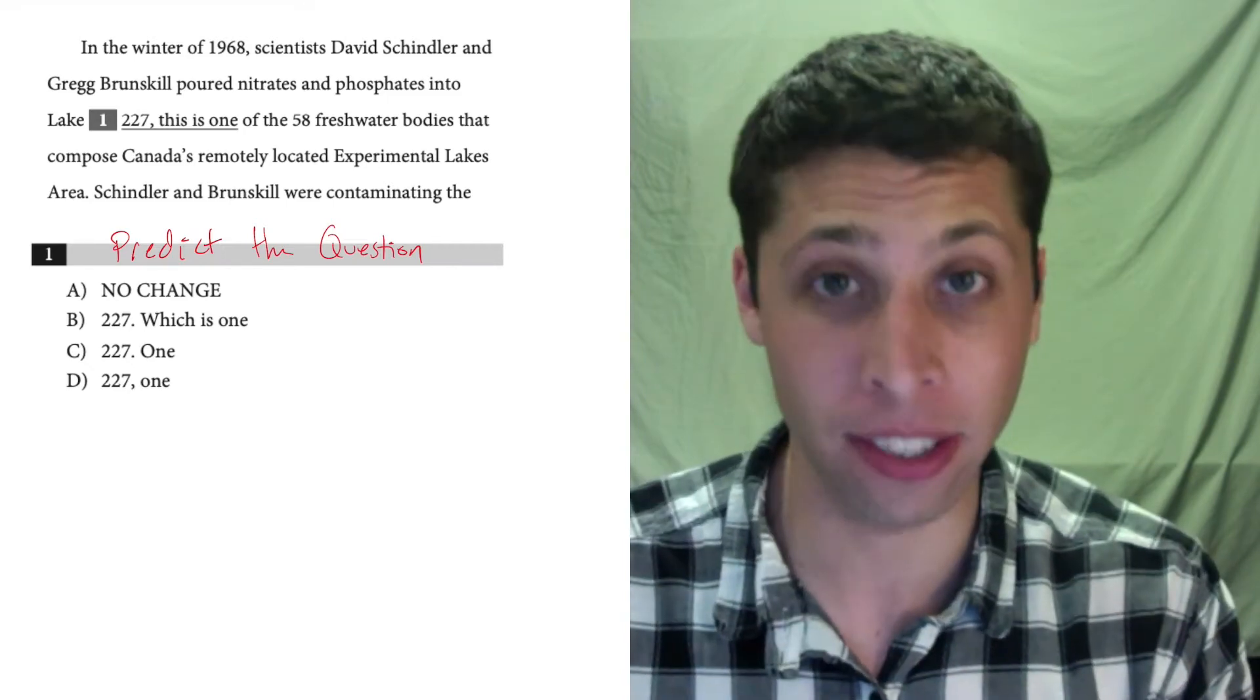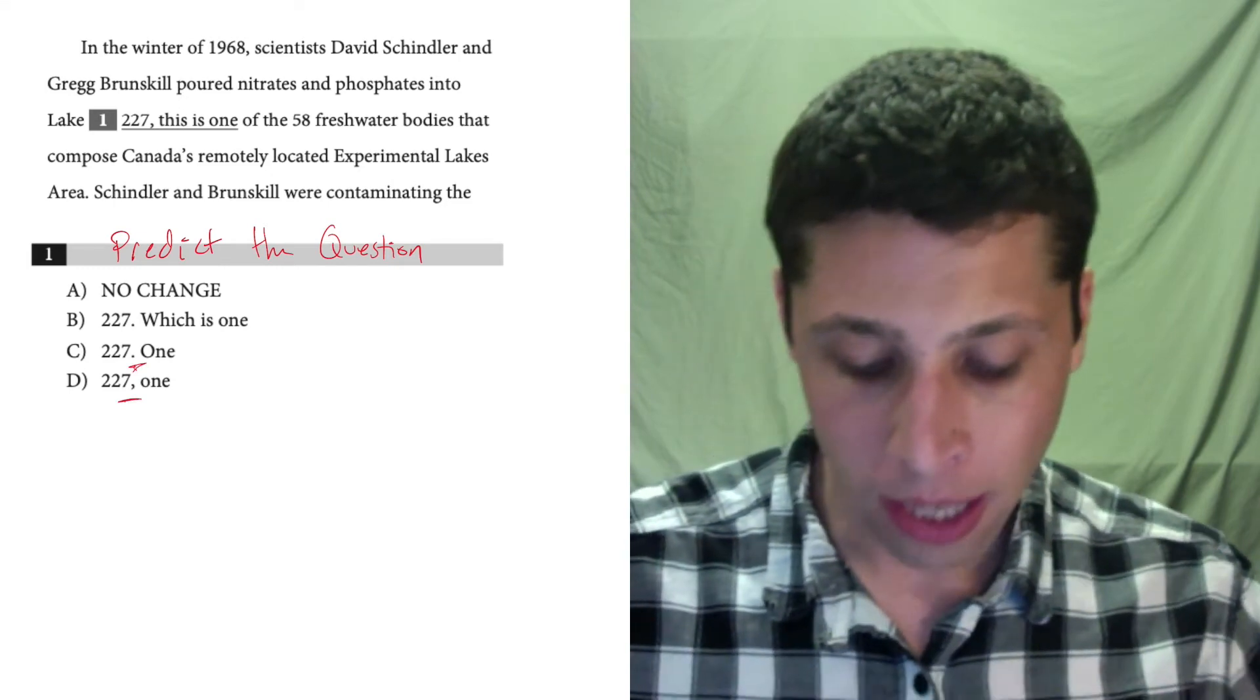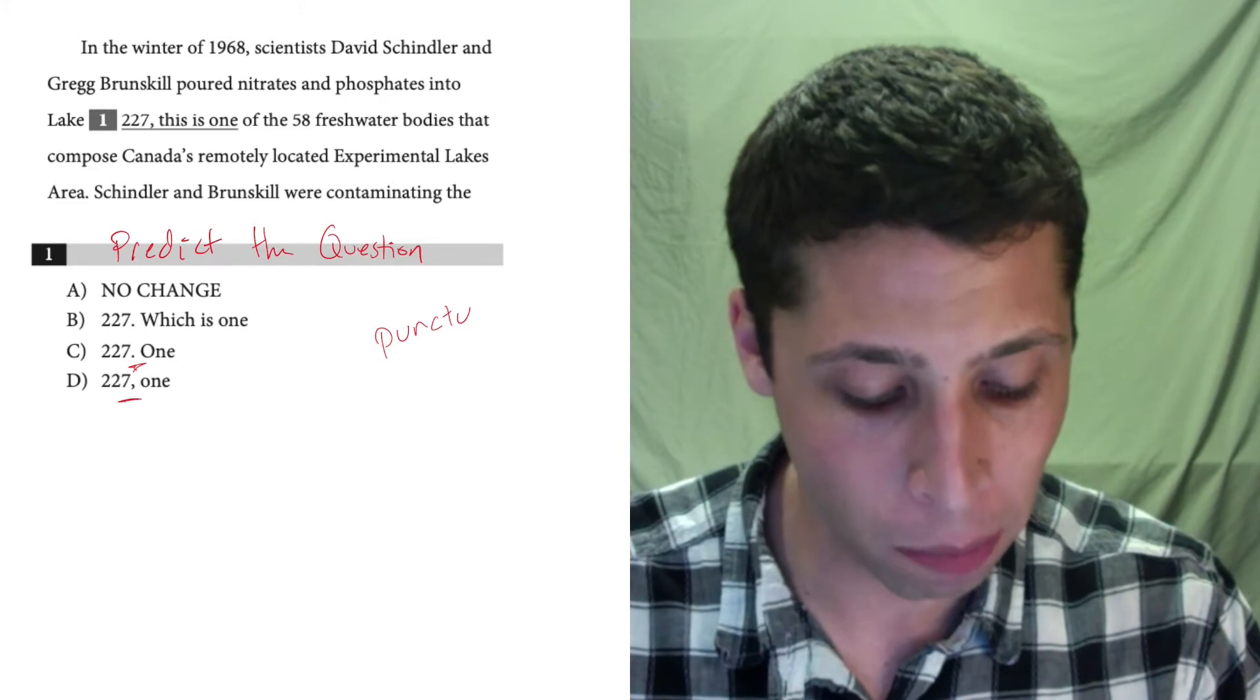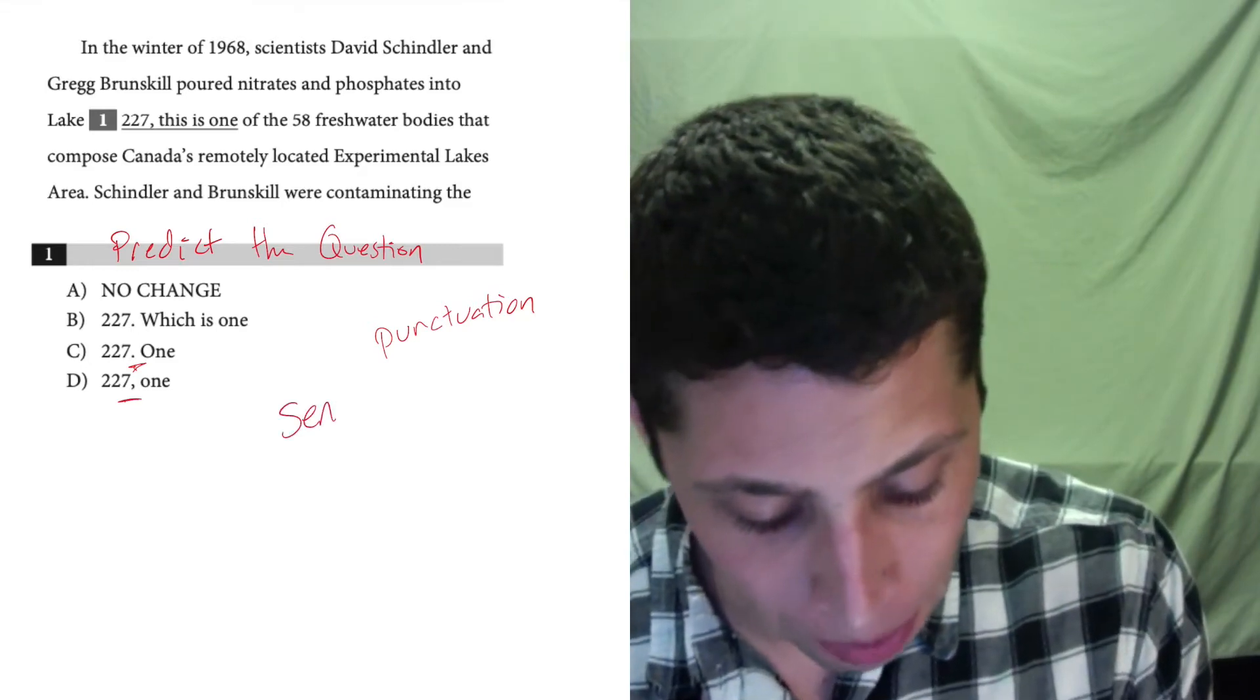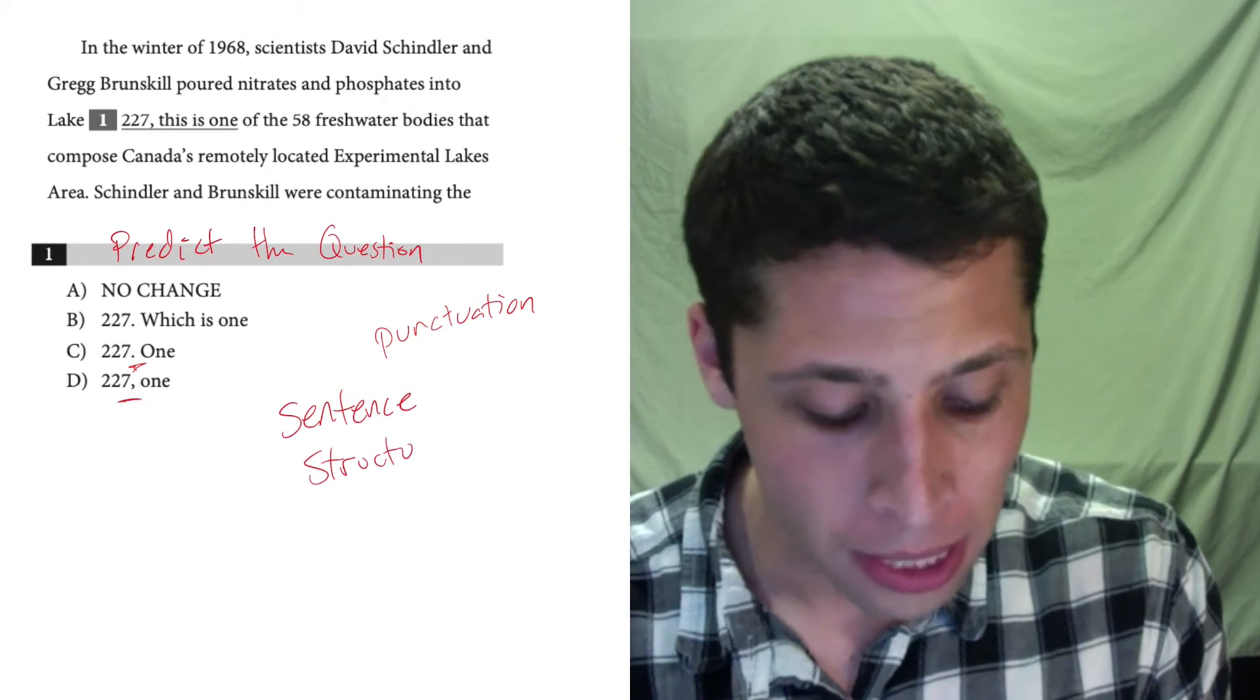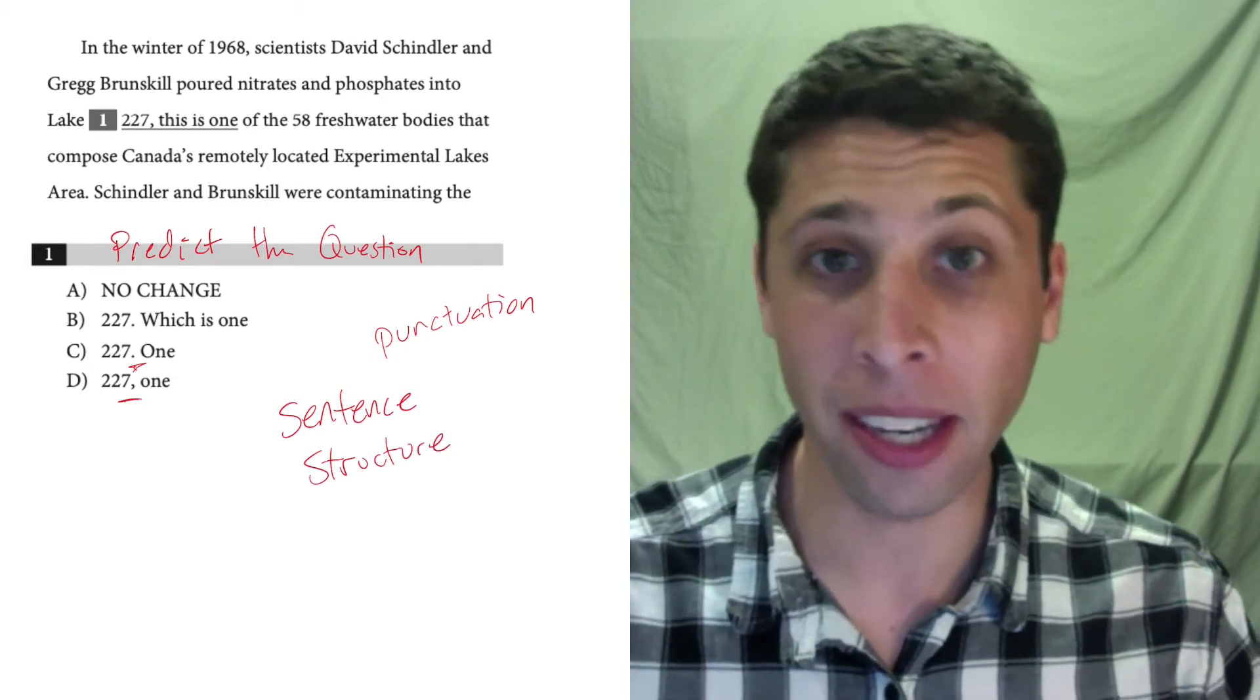So before I even read the passage, I'm looking at this and I'm noticing that they're swapping commas and periods here. So obviously then, this question is about punctuation. But even more broadly than that, whenever we think about punctuation, we need to think about sentence structure, meaning where do sentences begin and end? What makes something a sentence?